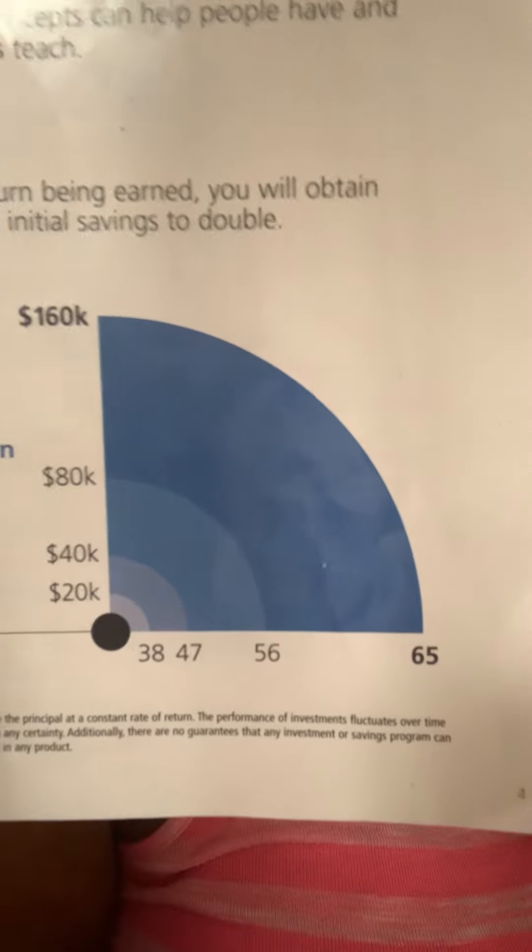And if you see this little graph that I have — so if you made a $10,000 investment at age 29, by age 65 you should have $160,000. So over time, that's almost 30 years. Imagine if you just start now while you have those 30 years ahead.